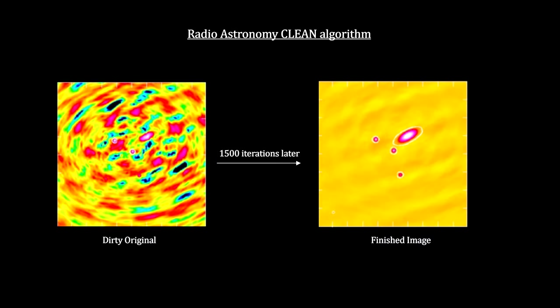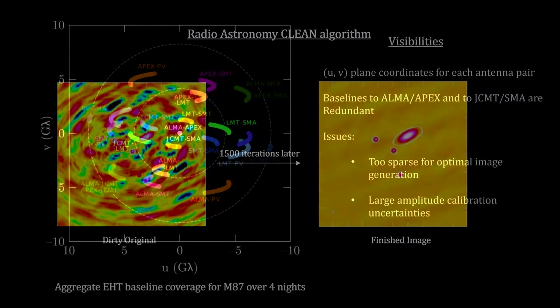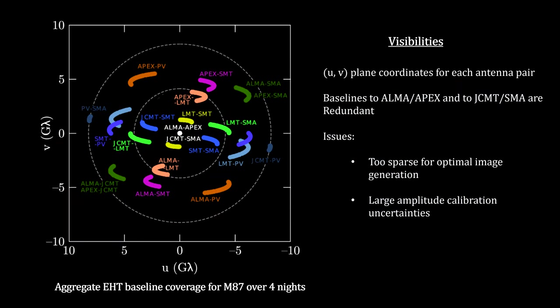However, there were two challenging issues with the EHT data. First, samples were limited to only a few hours a day for four days. Because the source plane is only sparsely sampled, the inverse problem is under-constrained. That is, the number of potential causes that can lead to these visibilities expands dramatically. And second, the measured visibilities had large amplitude calibration uncertainties.